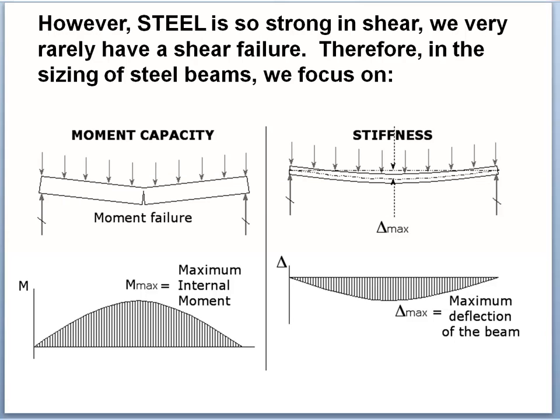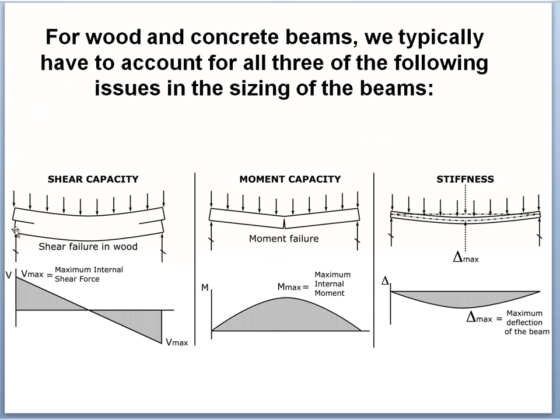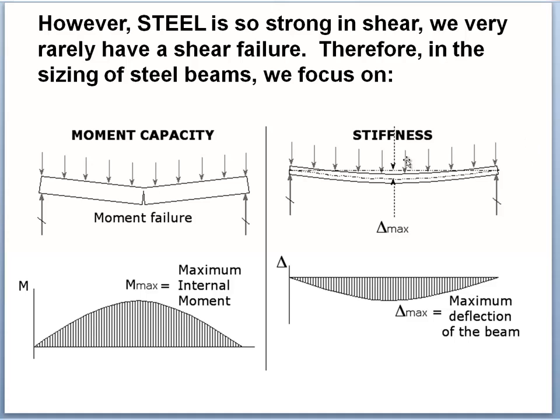In the case of steel which is very strong in shear, we rarely have a shear failure. Therefore in the sizing of steel beams we are going to focus on moment capacity and stiffness. It turns out for reasons that will become clear after a while, we typically size a steel beam for stiffness first and then for moment capacity. It really doesn't make any difference which you do first because you have to satisfy both of those. So you pick whichever one makes the sizing procedure simpler, and in the case of steel beams that is definitely to size for stiffness first and then for moment.